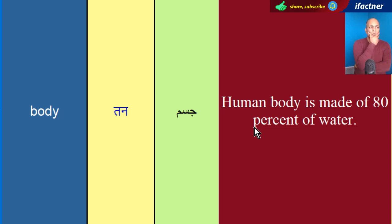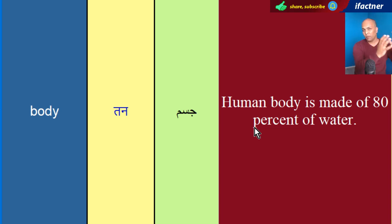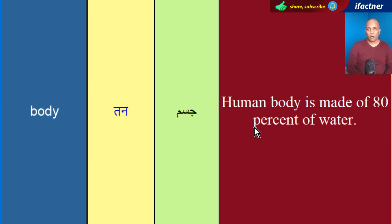Issi tarha, dustho, body ek aur meaning mein bhi use ho sakti hai — jisem 'body of water'. Kahi pe bohot zyada paani jama ho jaye, toh hum us ko bhi kehenge 'body of water'.